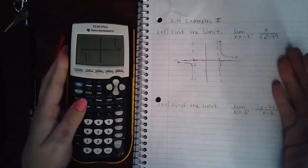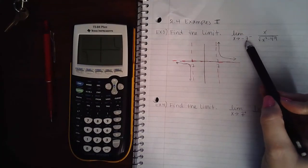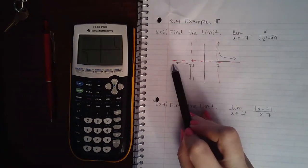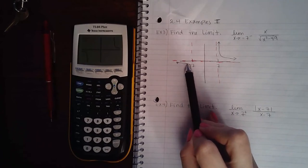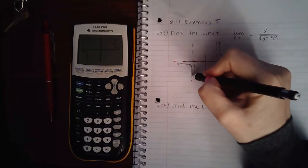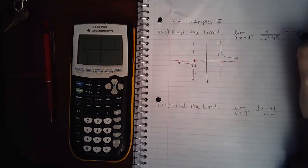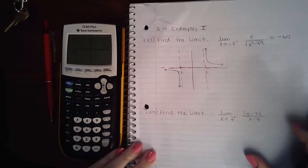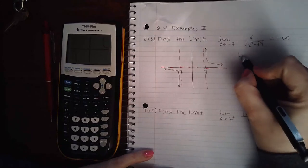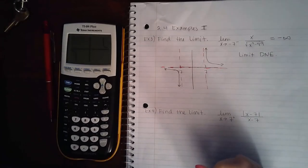Remember, this means we're approaching negative 7 from the left. Here's negative 7, and to the left would be over here. As I trace the graph getting closer and closer to x = -7, the y value is shooting downward toward negative infinity. So this limit equals negative infinity, but we've learned that whenever the limit is infinity or negative infinity, you say the limit does not exist.